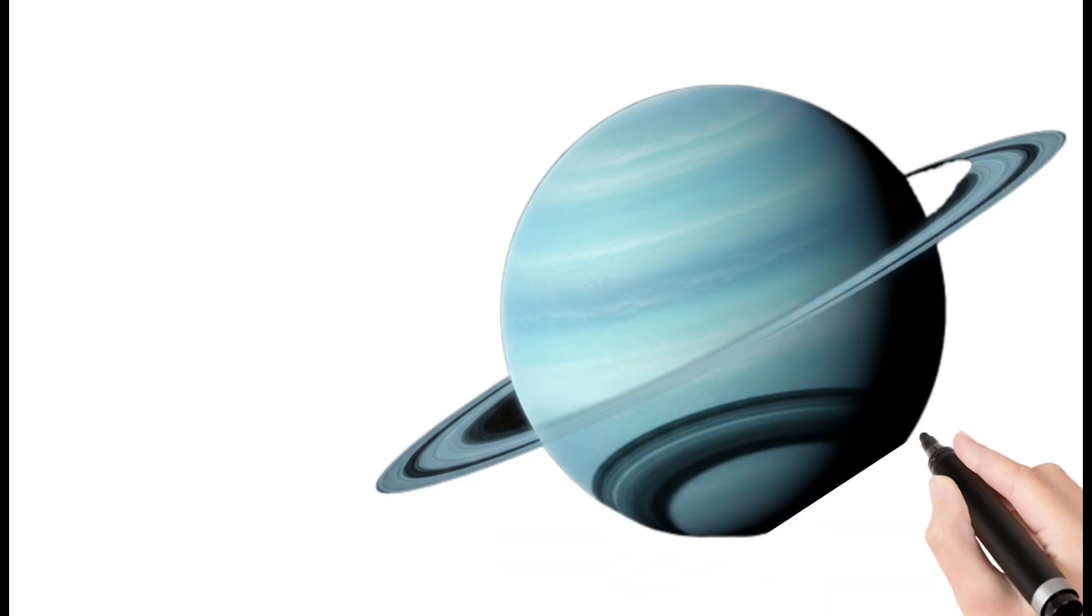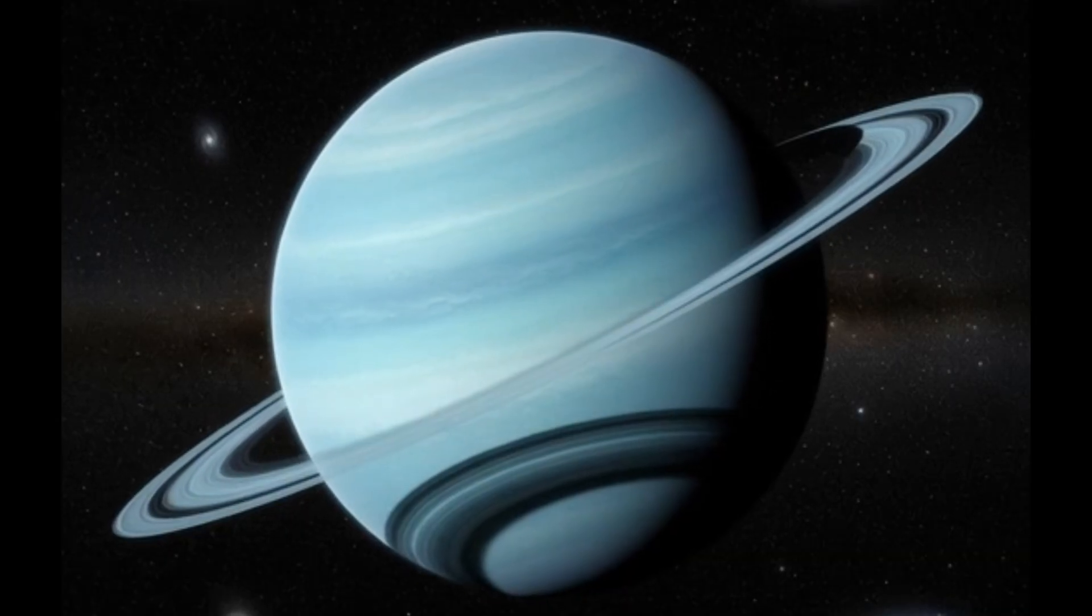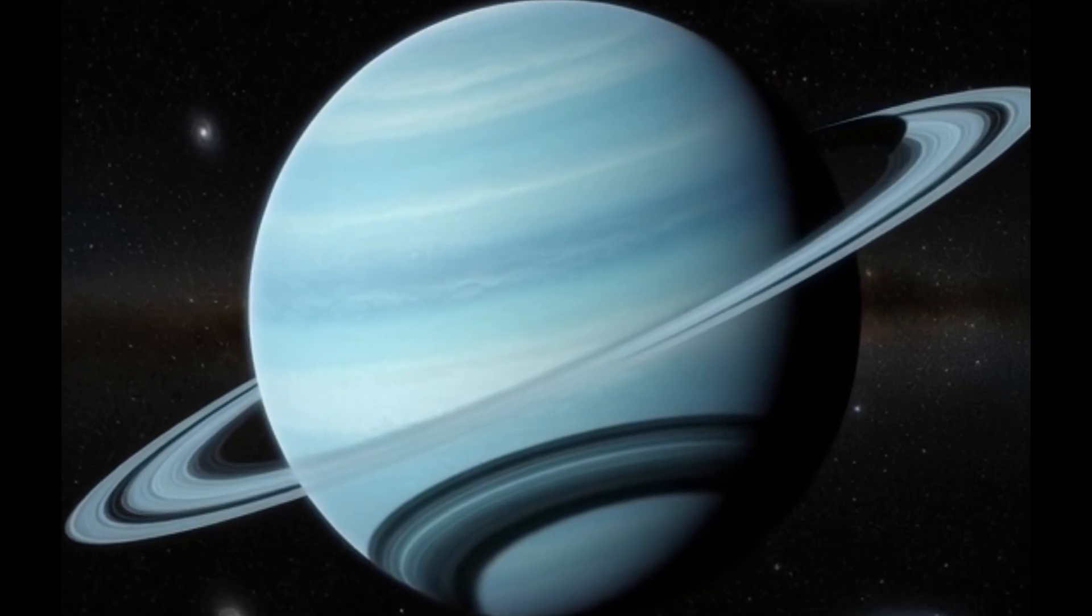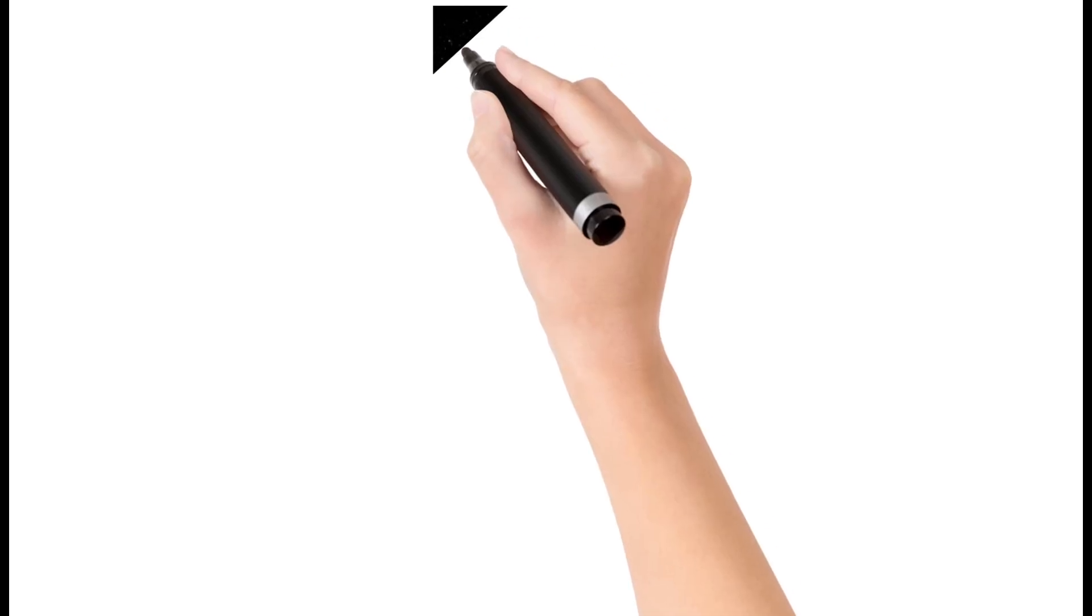Next, Uranus. Uranus rotates on its side. It has a blue-green color due to methane gas. The planet is extremely cold. It has faint rings.